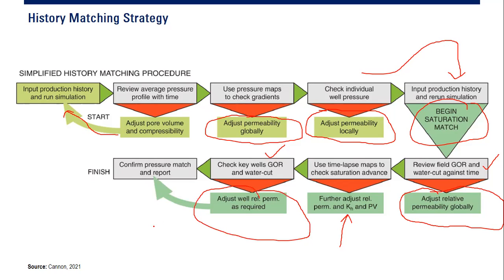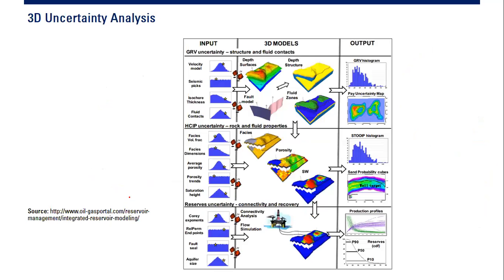If already matched, we confirm the pressure match and report. This is the workflow for history matching — for pressure and saturation. And again, regarding uncertainty: there are many sources of uncertainty. I want to go into a little bit more detail — this is the big picture of uncertainty.